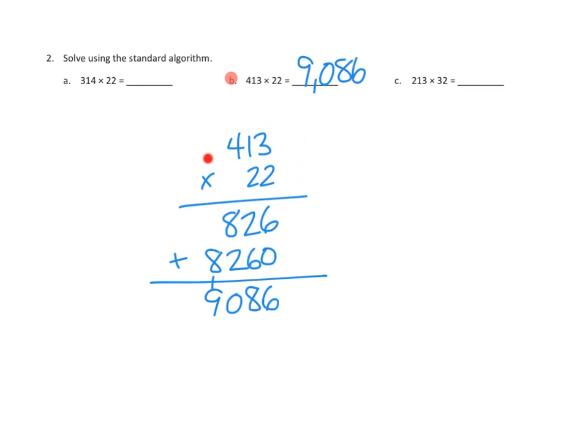You could, of course, break this down with our partial products using our area model as well, and you should see the very same numbers appearing if we multiplied 413 times 2, and then 413 times 20.